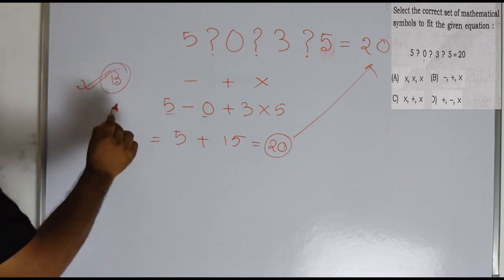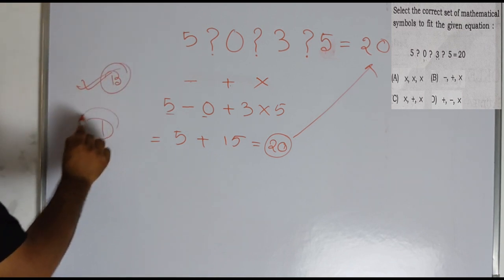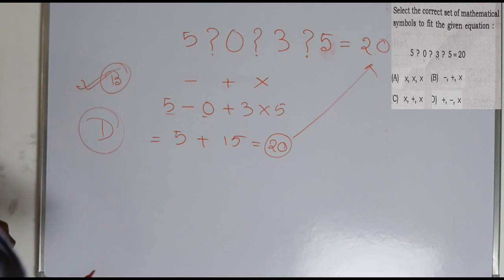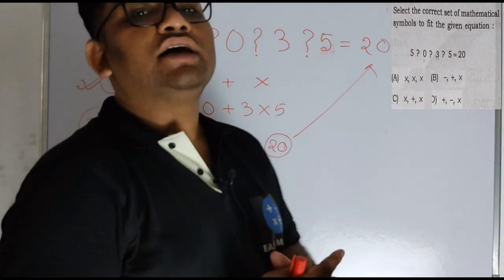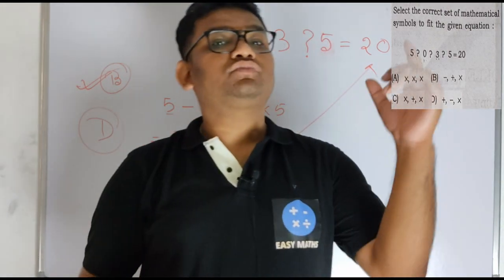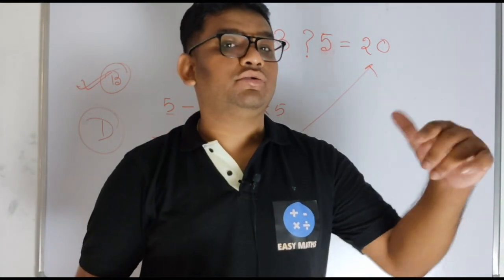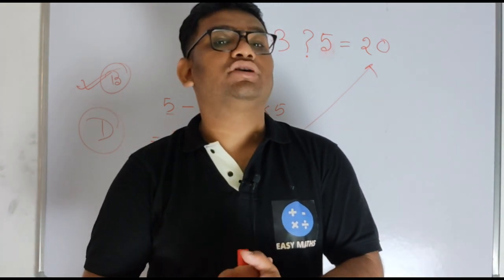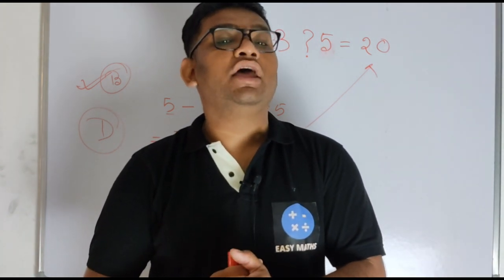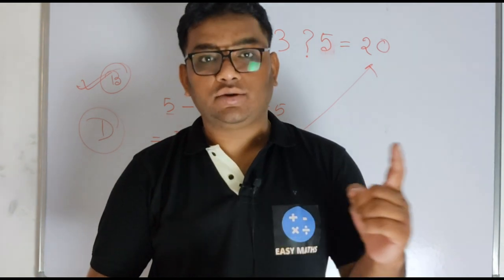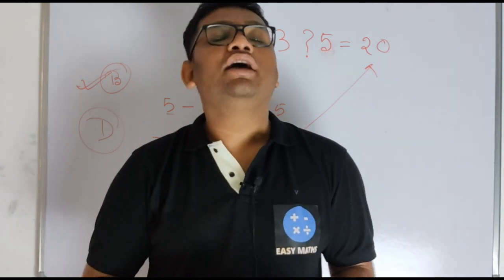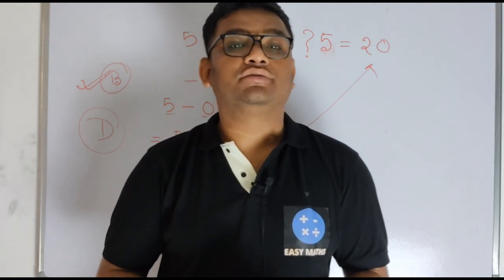One more question paper is set B. The question paper is set D and option B may be the same. The question is set B, so this is the next class. Thank you.